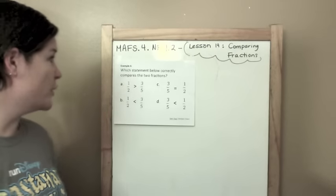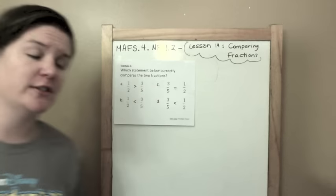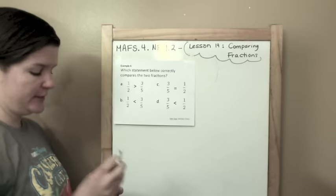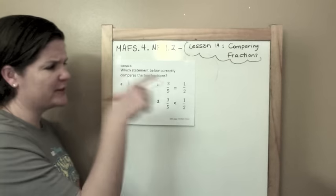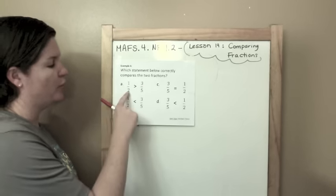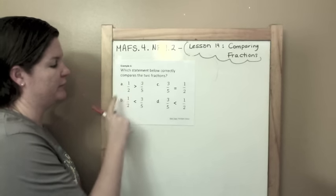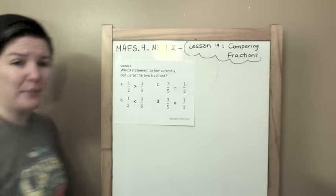This is example 4. Which statement below correctly compares the two fractions? Let's do our trick again. Actually I am gonna do the trick but I'm gonna teach you the visual way too. So I'm seeing the same fractions here. I'm seeing 1 half and 3 fifths repeated. I'm gonna draw this out. So we're comparing two fractions.